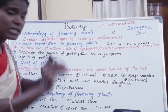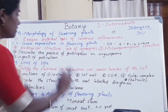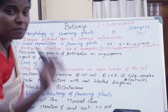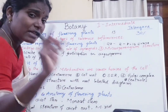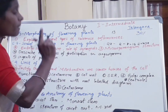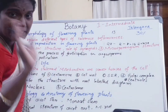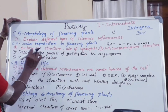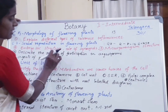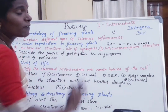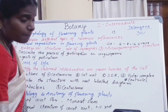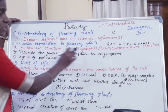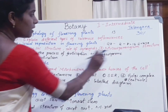Every student should learn the 7th chapter properly. From this chapter, 4 essay questions will come. First: embryo sac structure and role of synergids — the angiosperm embryo sac structure and role of synergids is one important topic.